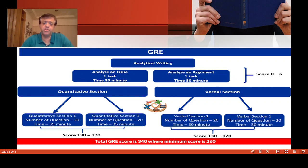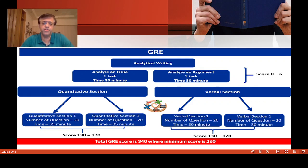What GRE wants to know is whether, when you are applying for a master's or PhD at an American university, you are capable of studying at that level. GRE measures that. The first section you see when you start your GRE exam is Analytical Writing, where you type two essays, because GRE is a computer-based exam.